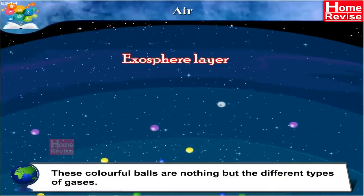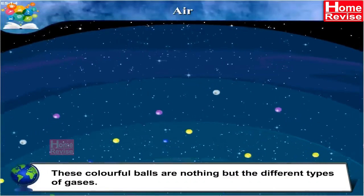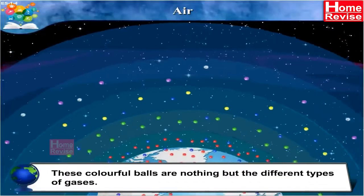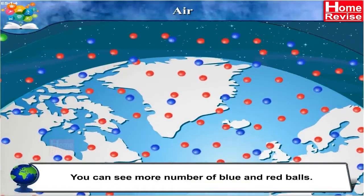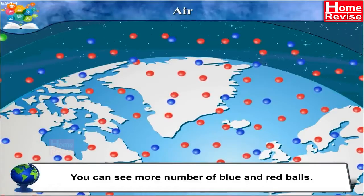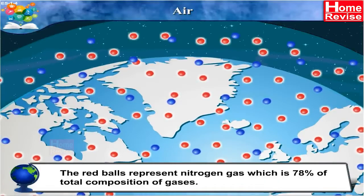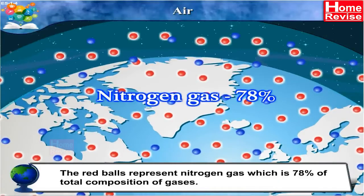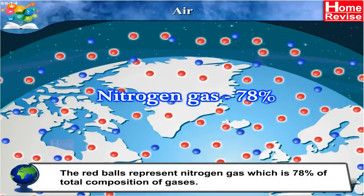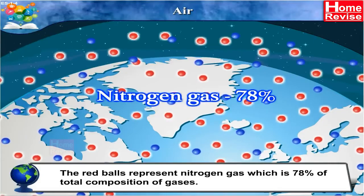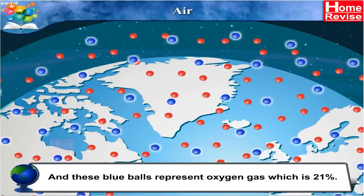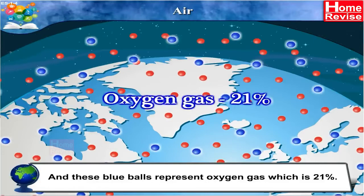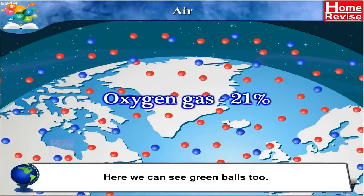These colourful balls represent the different types of gases. You can see more blue and red balls. The red balls represent nitrogen gas, which is 78% of the total composition of gases. The blue balls represent oxygen gas, which is 21%.